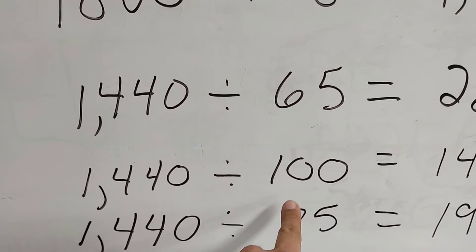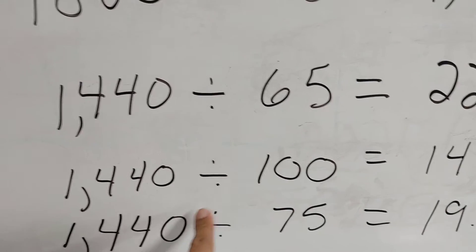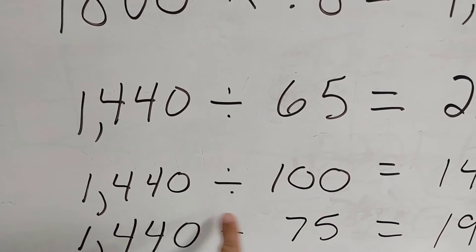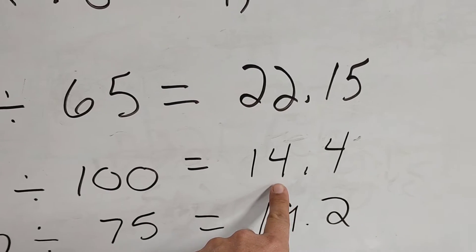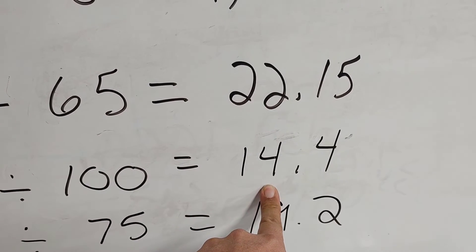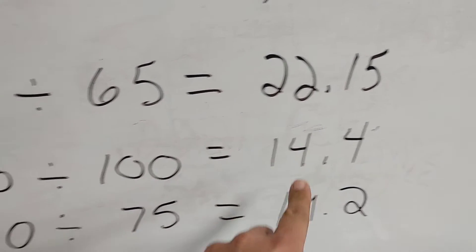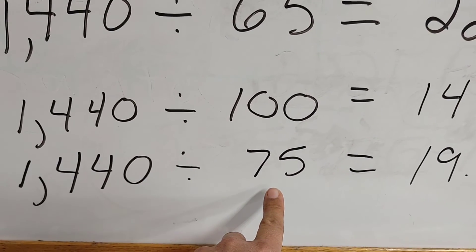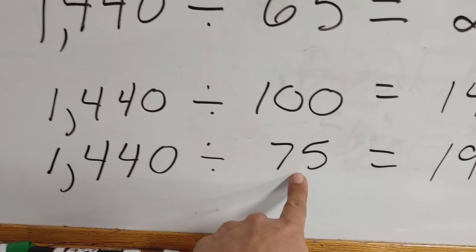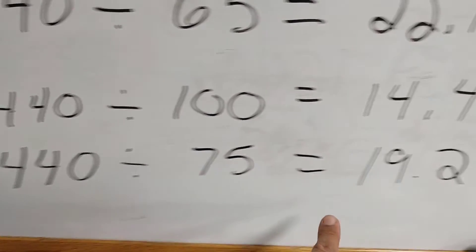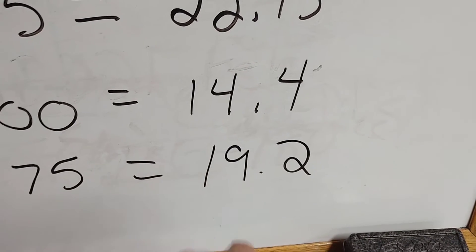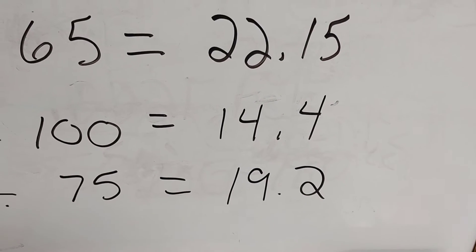And if you're using a 75 watt rated fixture, you're going to divide 1,440 by 75, and you're going to have 19 fixtures that you can put on that circuit. So using the example we just went over, you're going to be able to go with 22 fixtures for 65 watts, 14 fixtures for 100 watts, or 19 fixtures for 75 watts.